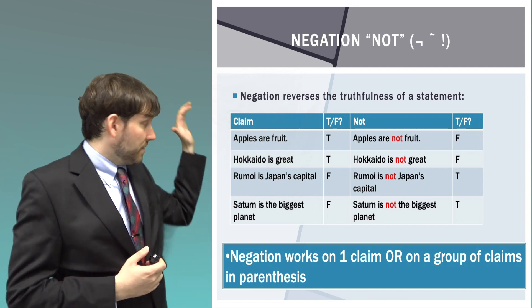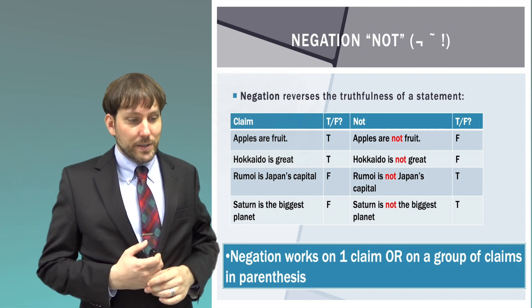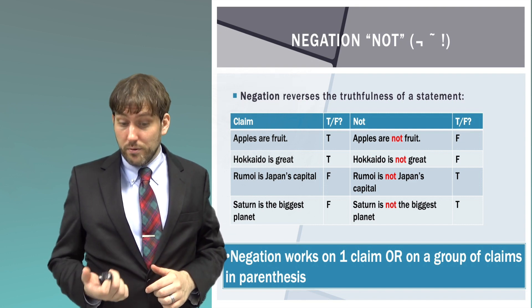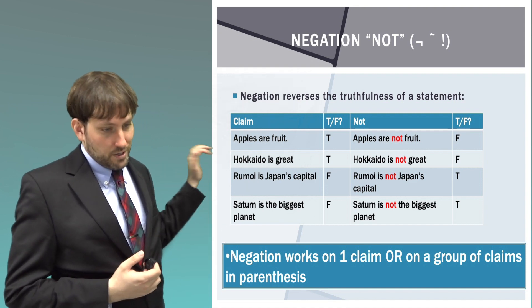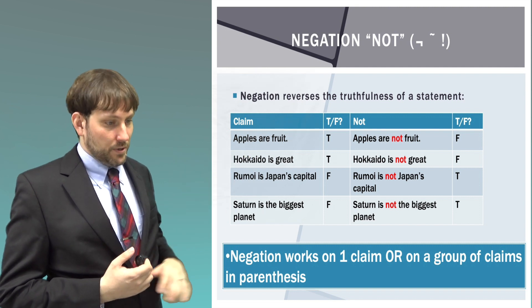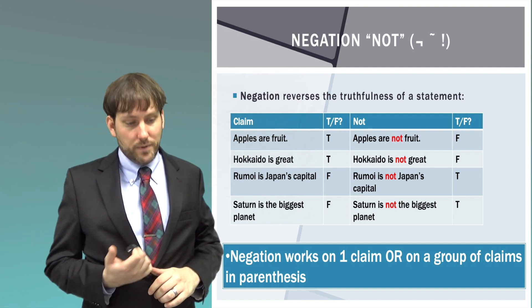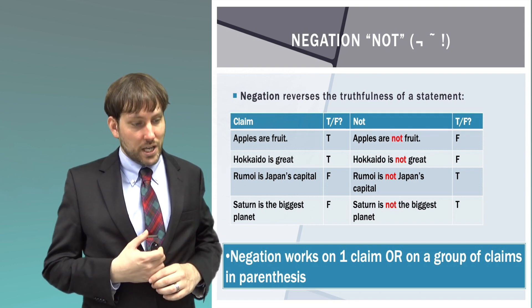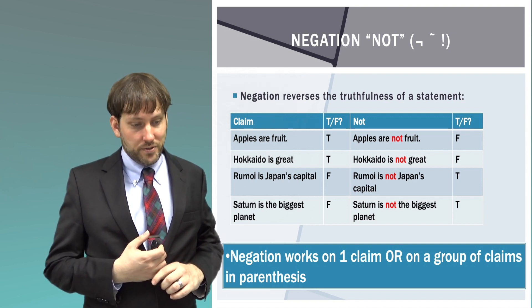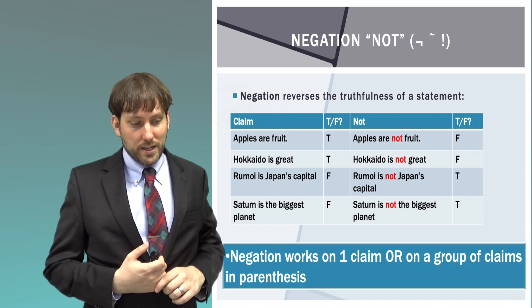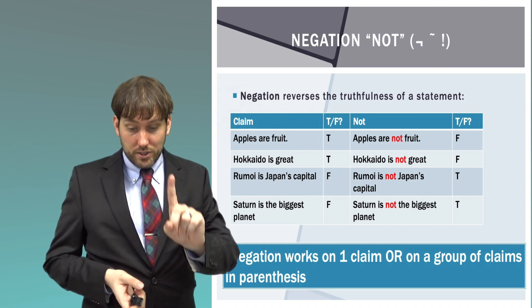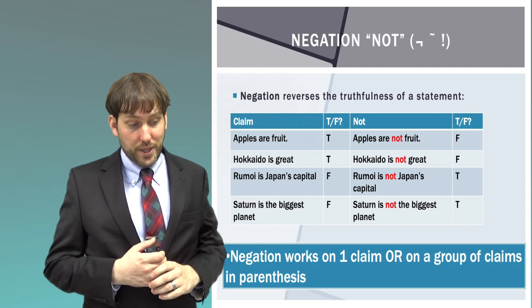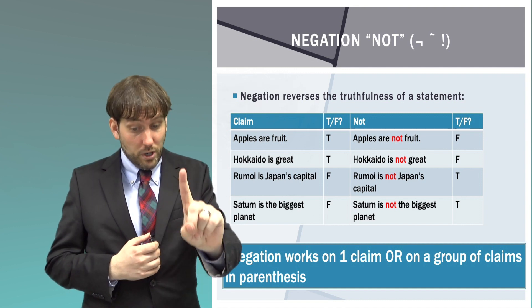What is negation? Negation reverses the truthfulness of a statement. So, apples are fruit is true; apples are not fruit is false. Hokkaido is great — true; Hokkaido is not great — false. Rumoi is Japan's capital — false; Rumoi is not Japan's capital — true. Saturn is the biggest planet — false; Saturn is not the biggest planet — true. Negation works on one claim, or you can put things together and negation works on things as a group, but it works on only one thing at a time.